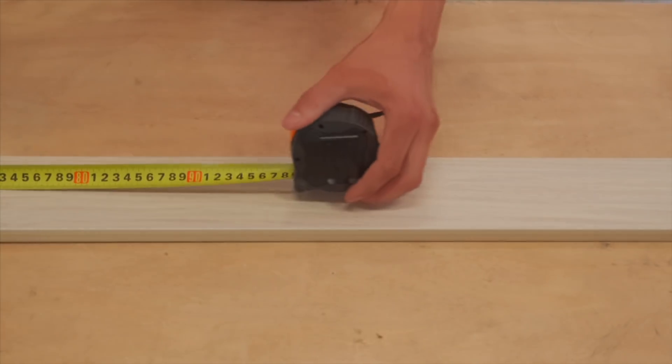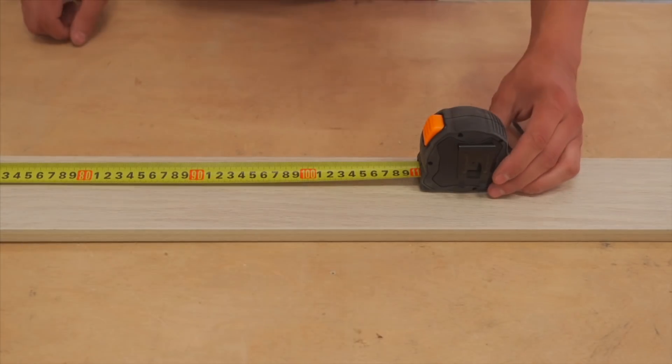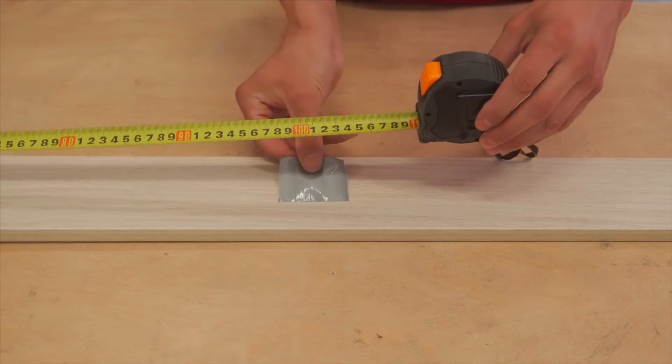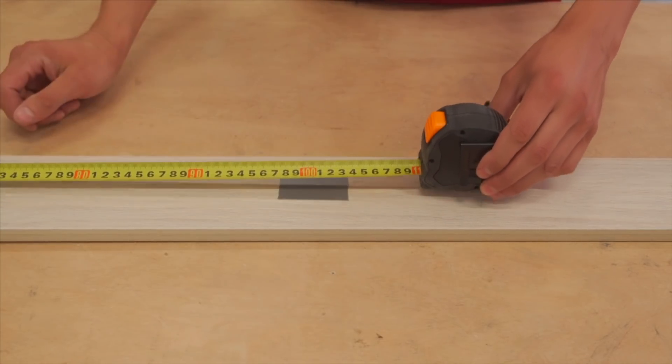If your measuring tape is too short to measure the long board, you can measure from both sides and sum up the result.